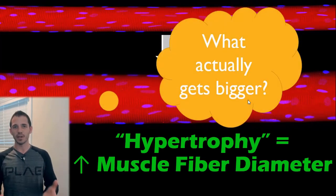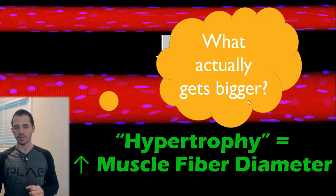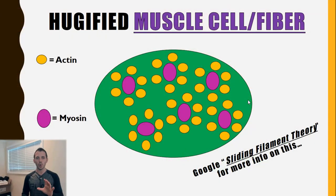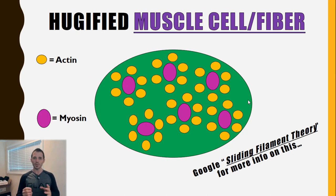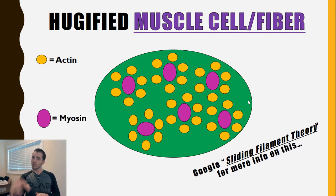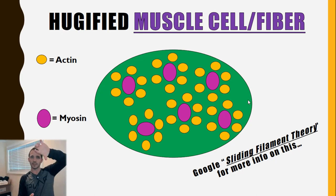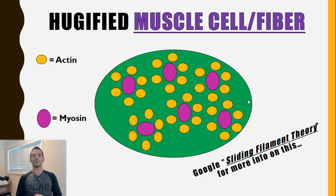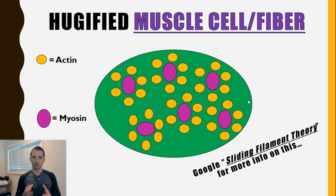What actually gets bigger? We know the fiber gets larger, but why does the fiber itself get larger? We have to take a quick look at the microanatomy of a muscle cell. Imagine the green circle there is one of those individual muscle fibers, and instead of running it lengthwise, I've just looked straight down at it — we're looking at the circle. For muscle to contract, we have two primary filaments: one is called actin and the other is called myosin.